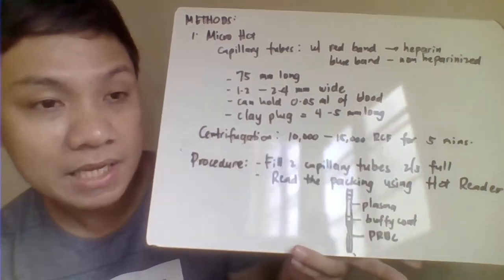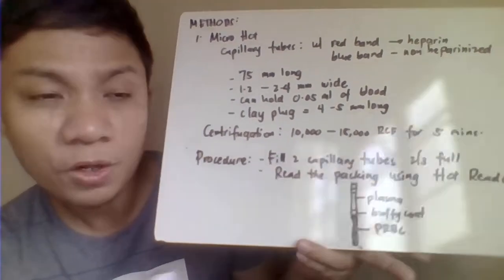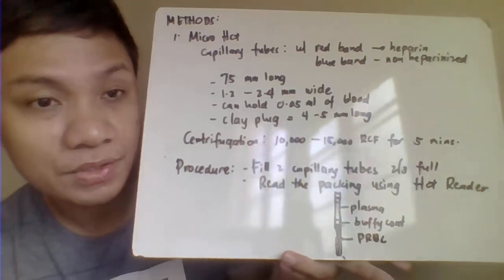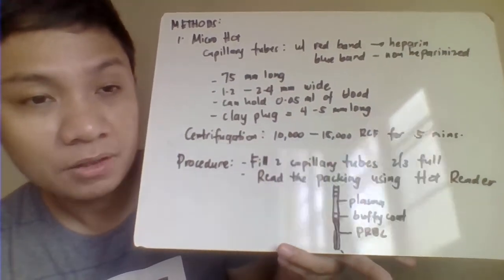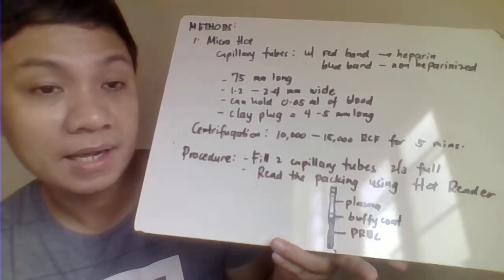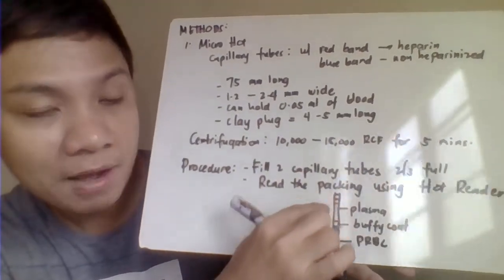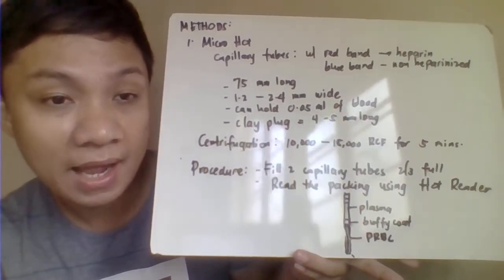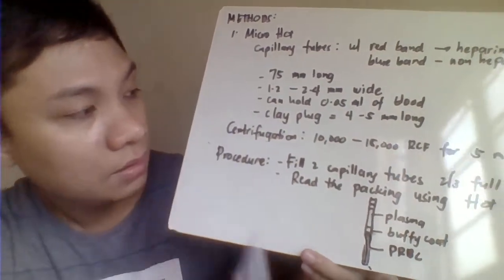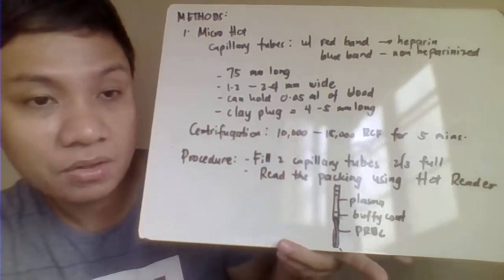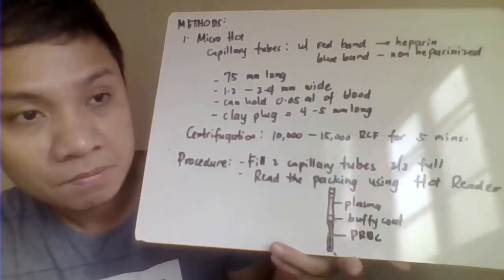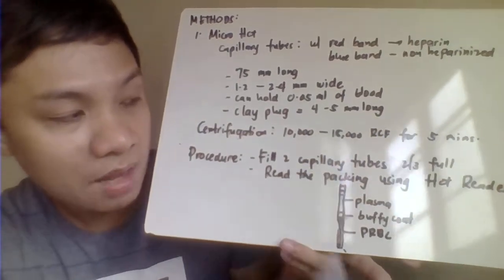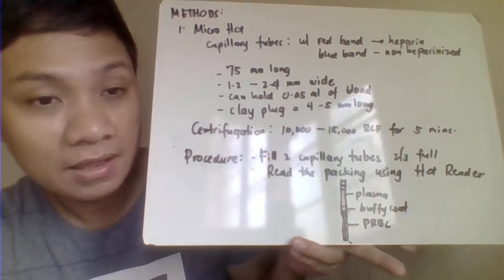Procedure for the micro-hematocrit method: perform a skin puncture or use EDTA-collected blood. Fill approximately two-thirds of the capillary tube. If overfilled and sealed, blood may overflow and red cell components may be lost, affecting the result. Fill to two-thirds so that when sealed, it does not overflow.